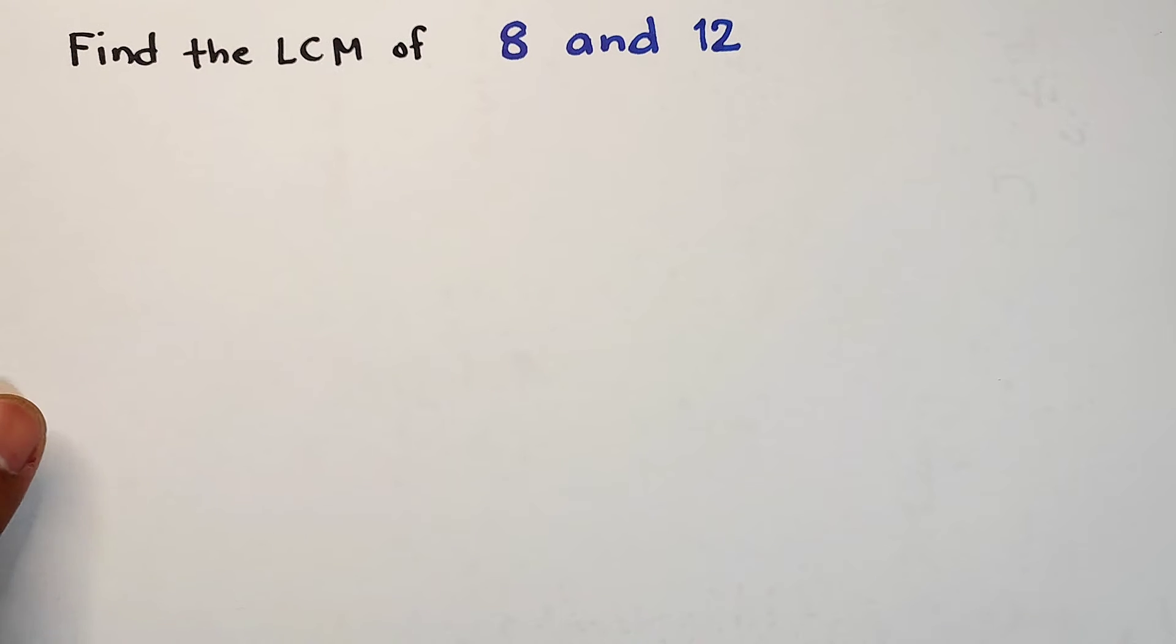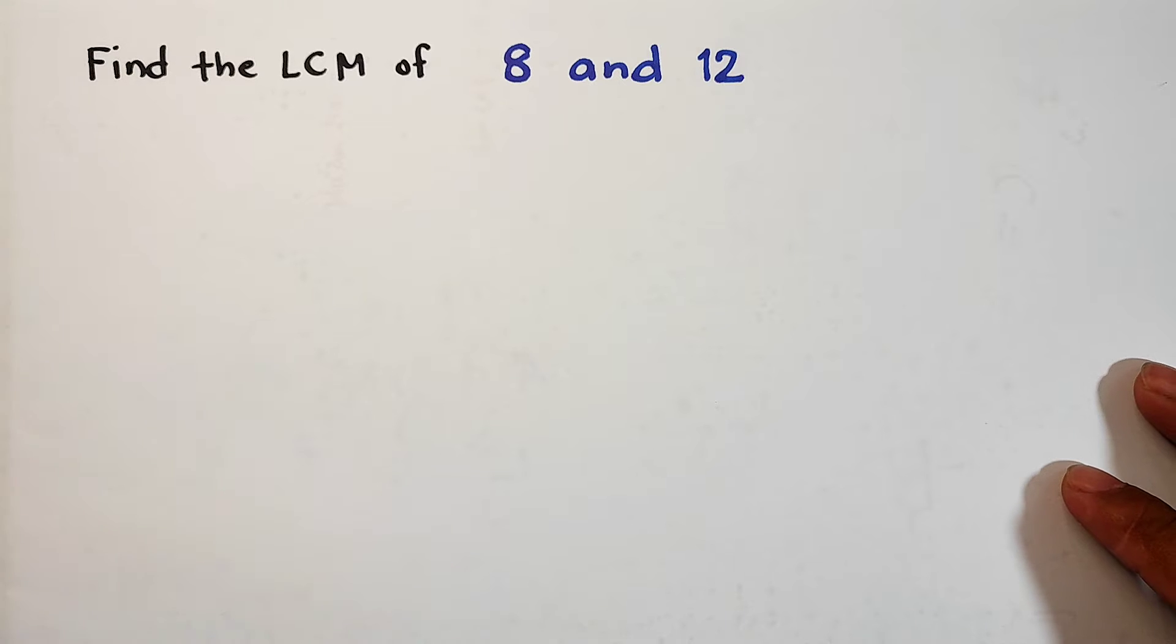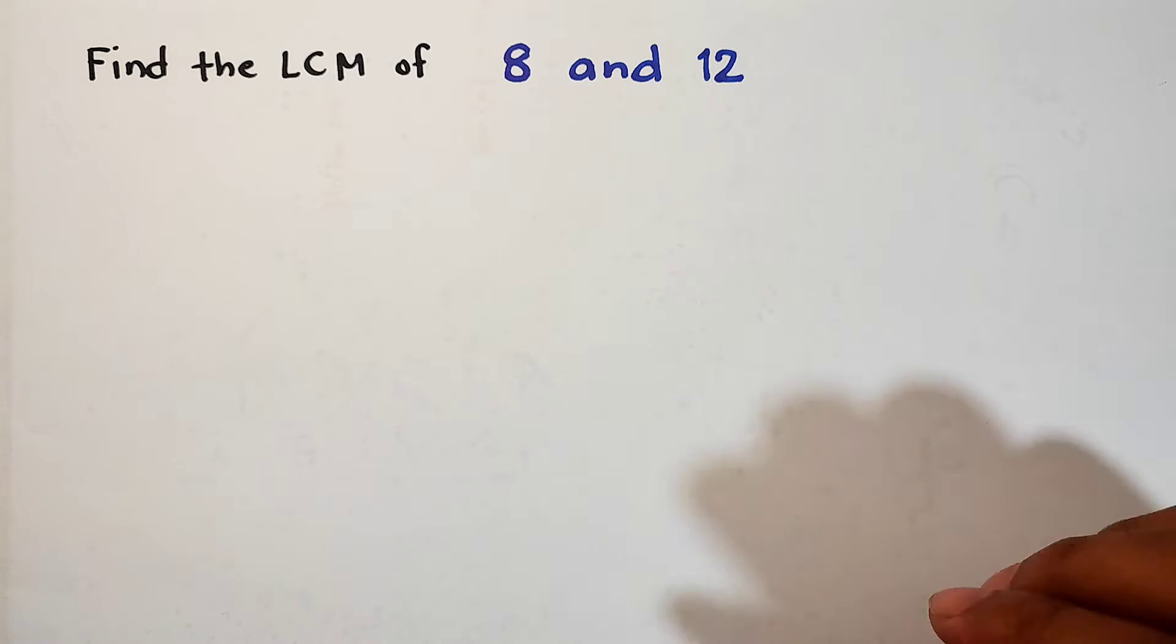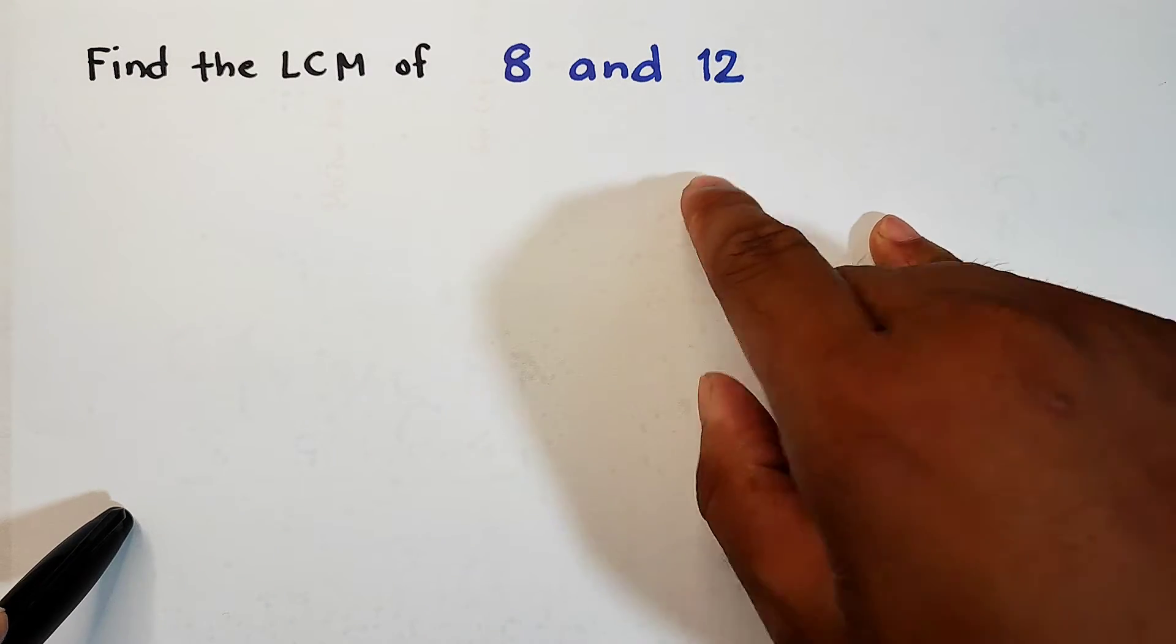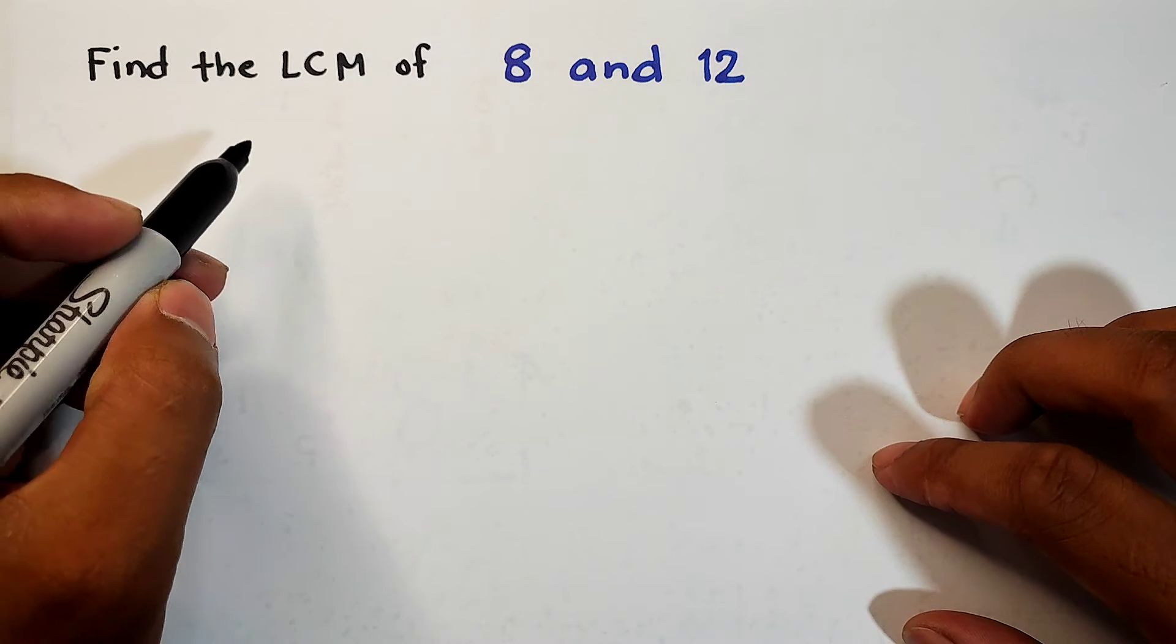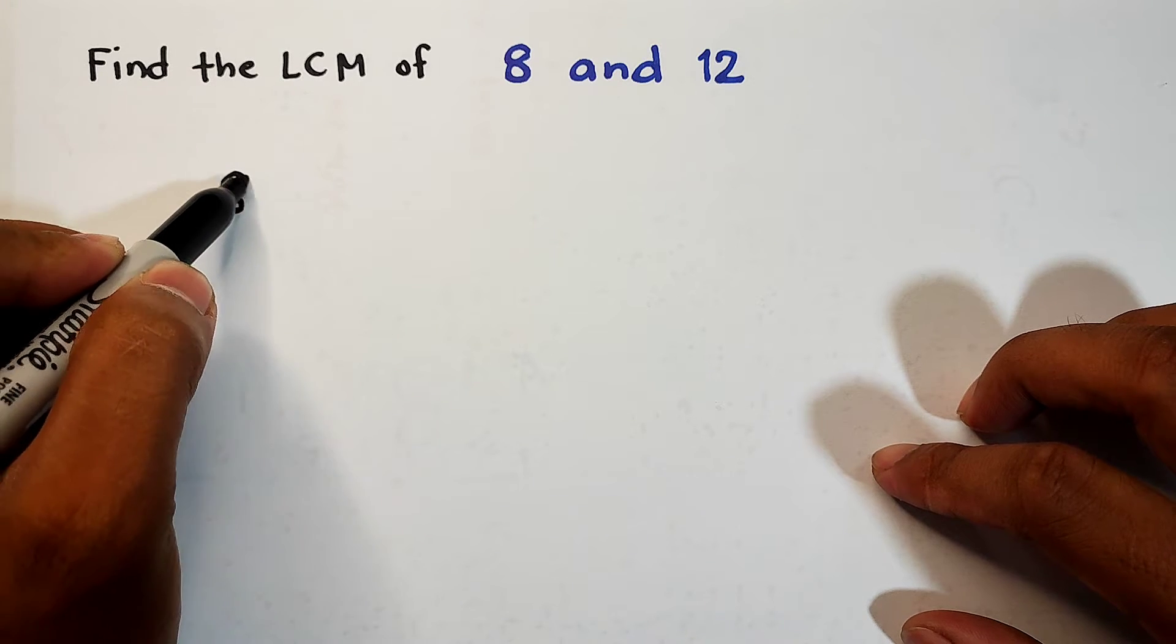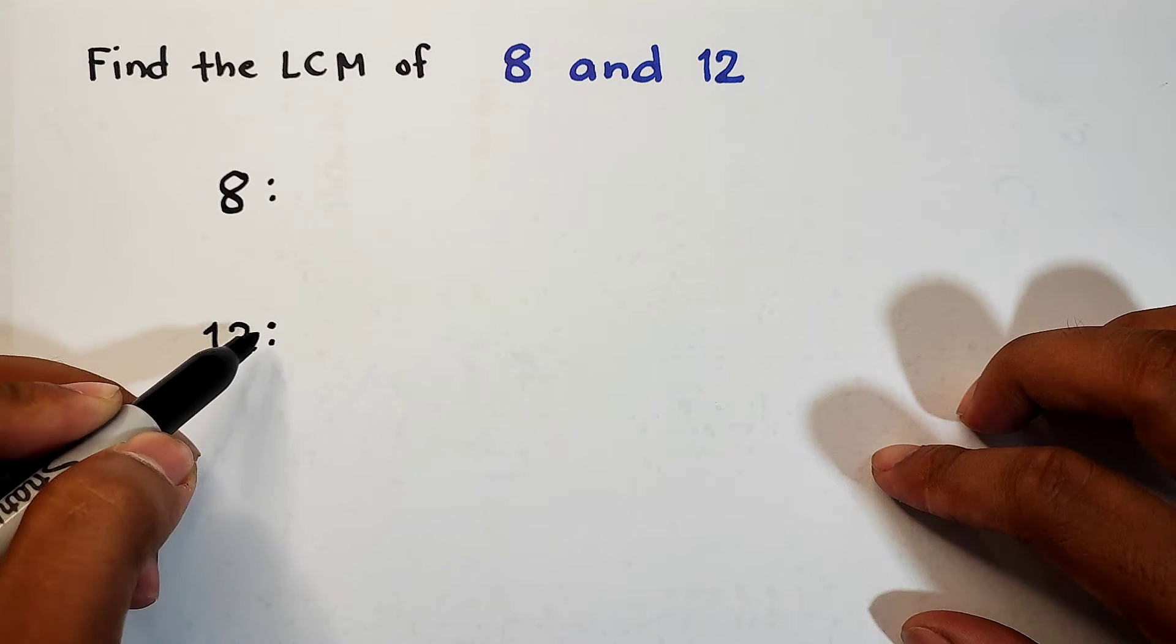So without further ado, let's do this topic. Basically guys, before we dive in to our example where we will try to find the LCM or the least common multiple of three numbers, let us know first how to find the multiples or the LCM of two different numbers. What we have here is 8 and 12. The first method that I'm gonna show you is simply by using the listing method.